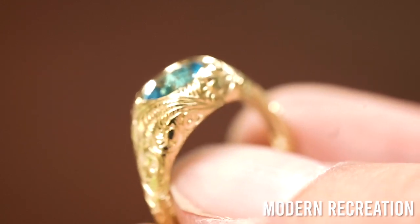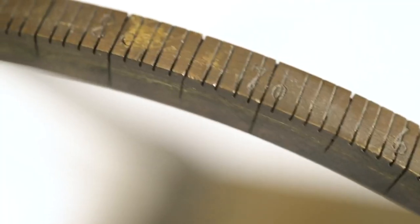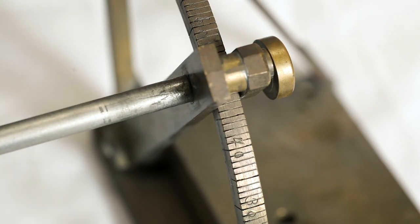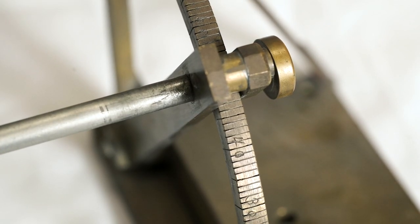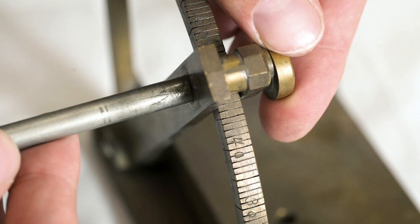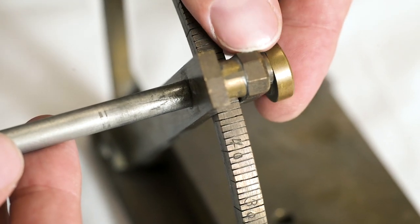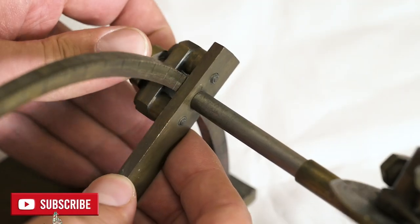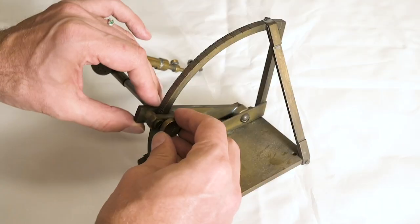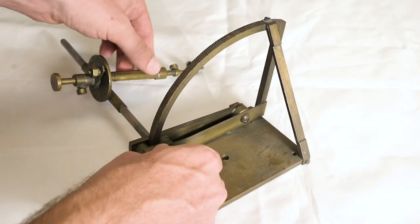The machine is based around a brass arc that has regular angles marked on it from 0 to 90 degrees. By adjusting this angle slider, Cross could cut a facet at whatever angle he chose. He could go all the way down to zero degrees to cut his girdle.